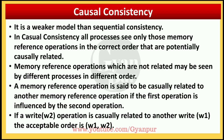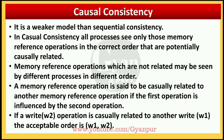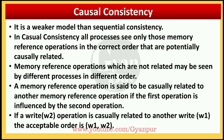Causal consistency is a weaker model than sequential consistency. All processes see only those memory reference operations in the correct order that are potentially causally related. Memory reference operations that are not causally related may be seen by different processes in different orders. A memory reference operation is said to be causally related to another if the first operation is influenced by the second.